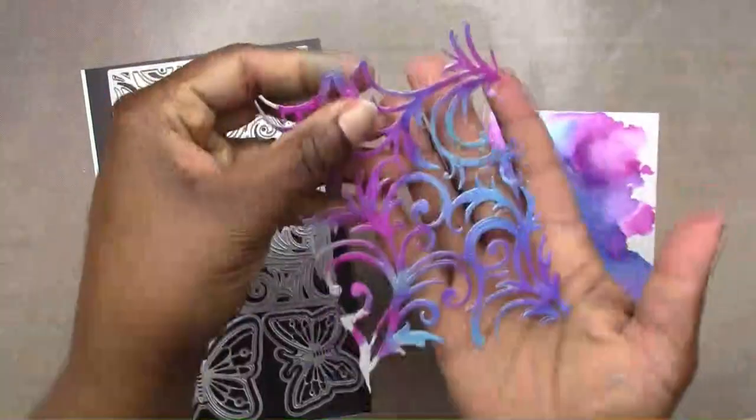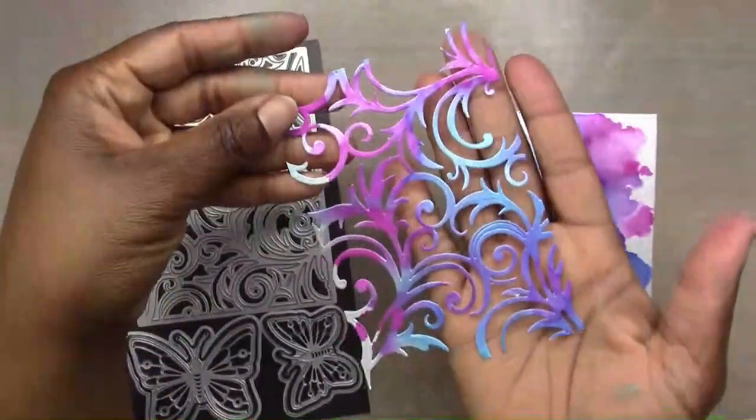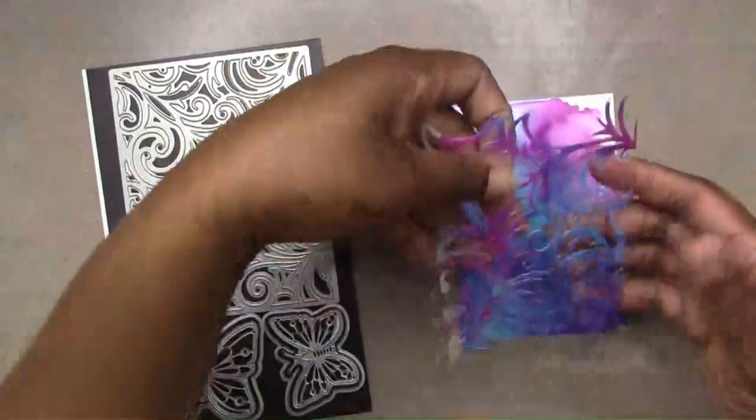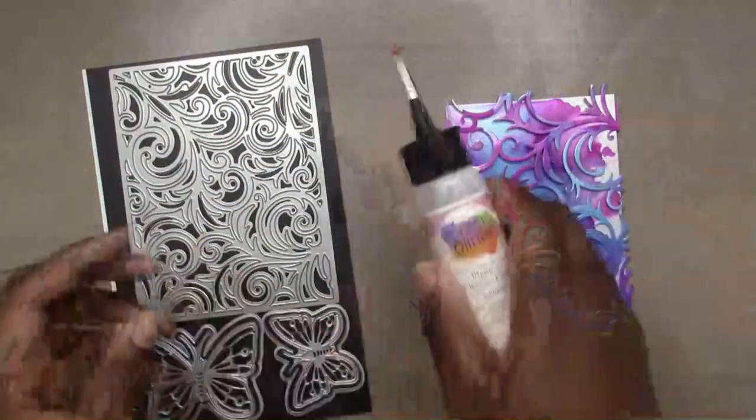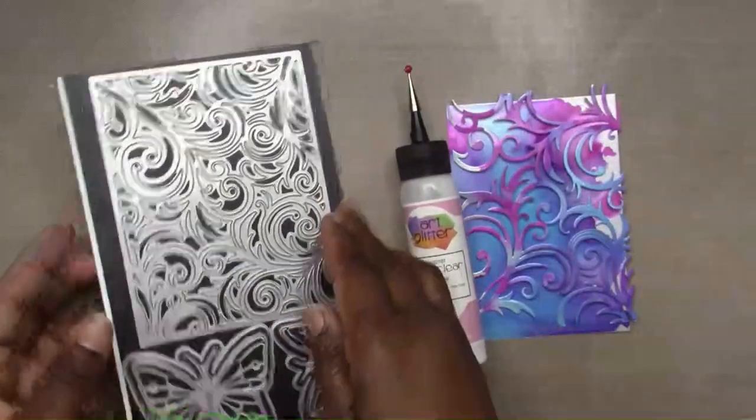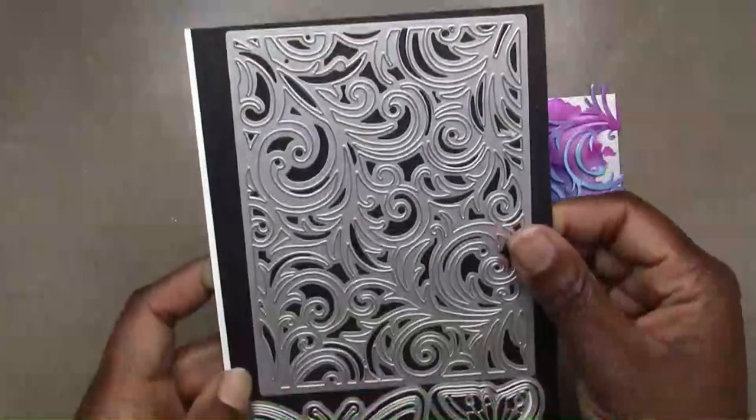Next I'm taking some wafer dies. This one I cut out one of the panels using the Crafter's Companion Grand Swirls, which I'll show you guys, and then I'm also going to be using a